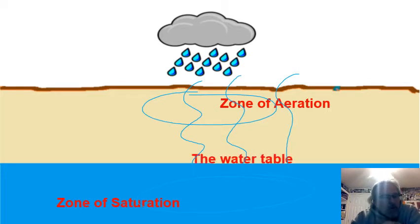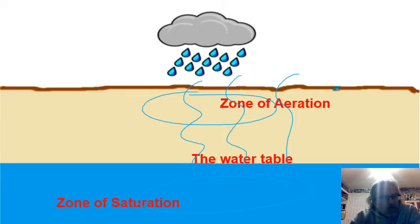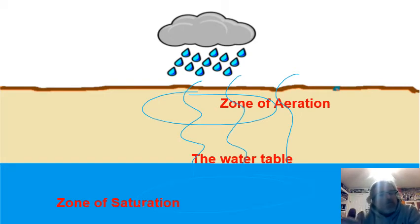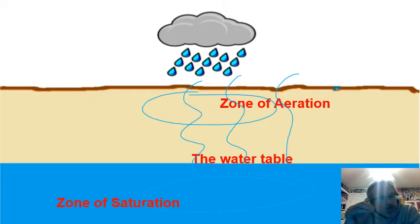The zone of saturation is the part of the ground where it is saturated — full of water — where all of the air spaces are filled with water. The point at which that begins is called the water table. The water table is the point where the ground begins to be full or saturated with water.